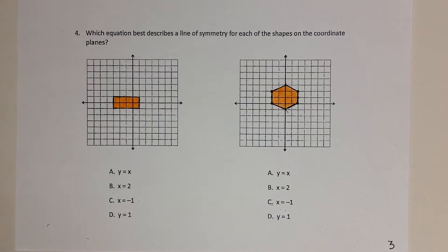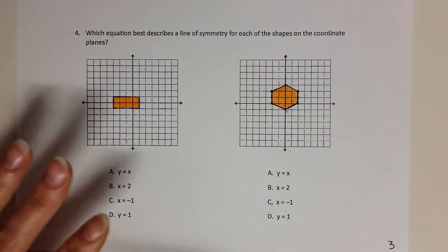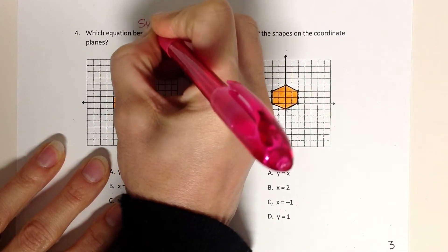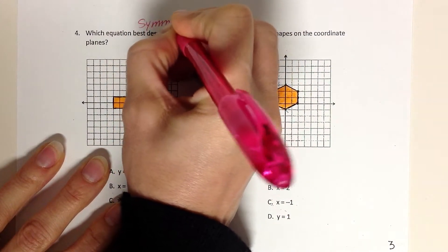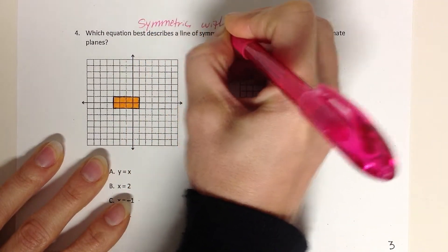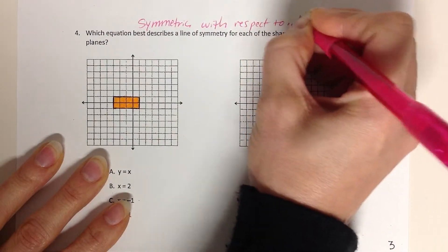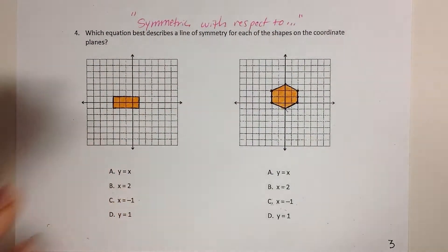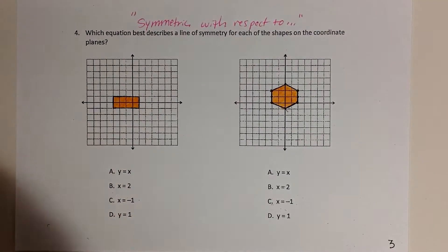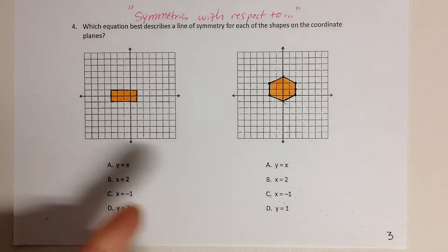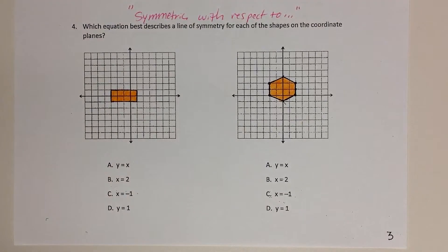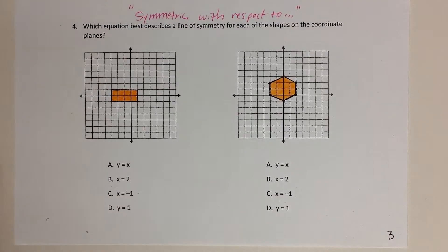One last thing I want to talk about with symmetry is when they put it in the coordinate plane — you might need a refresher on your algebra. How they might ask this is if a figure is symmetric with respect to a given line. That's another way they could ask this that students would get confused by. So let's do one of these together — we'll need to review some stuff from algebra.